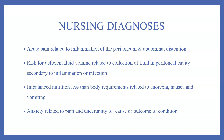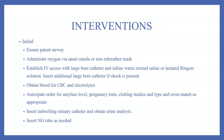Additional nursing diagnoses include imbalanced nutrition less than body requirements, related to anorexia, nausea, and vomiting, and anxiety related to pain and uncertainty of the cause or outcome of the condition. The nursing interventions in the initial stage include ensuring a patent airway and administering oxygen via nasal cannula or non-rebreather mask.